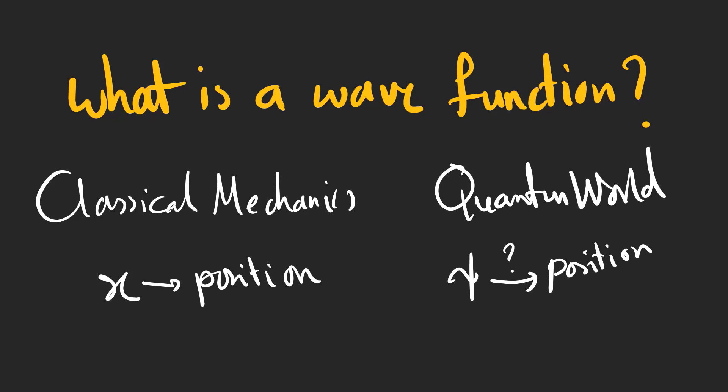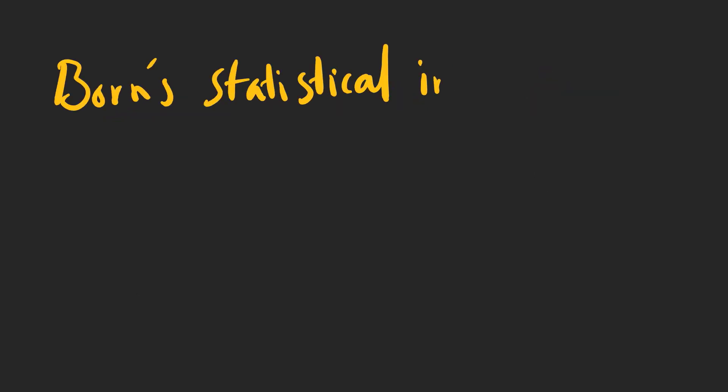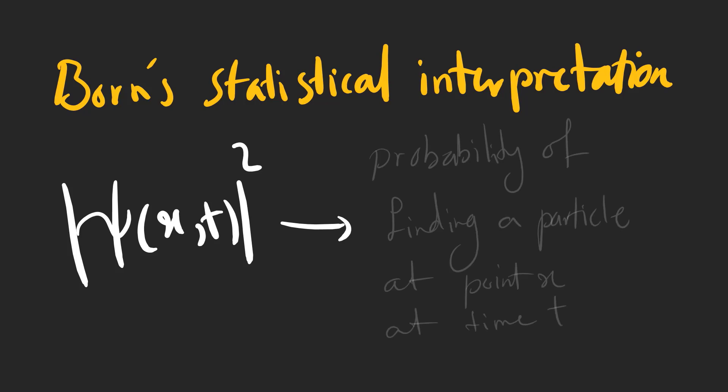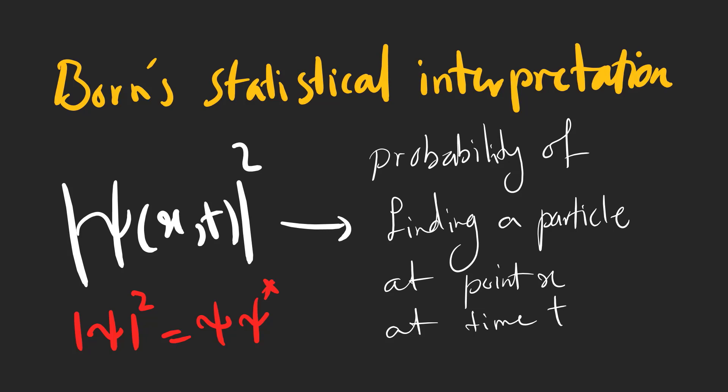Let's see what a wave function is. The statistical interpretation of the wave function, proposed by Max Born, says that psi squared shows the probability of a particle at point x at time t. It is important to note that psi is complex-valued, and the product of psi with its conjugate gives the probability amplitude for the wave function.